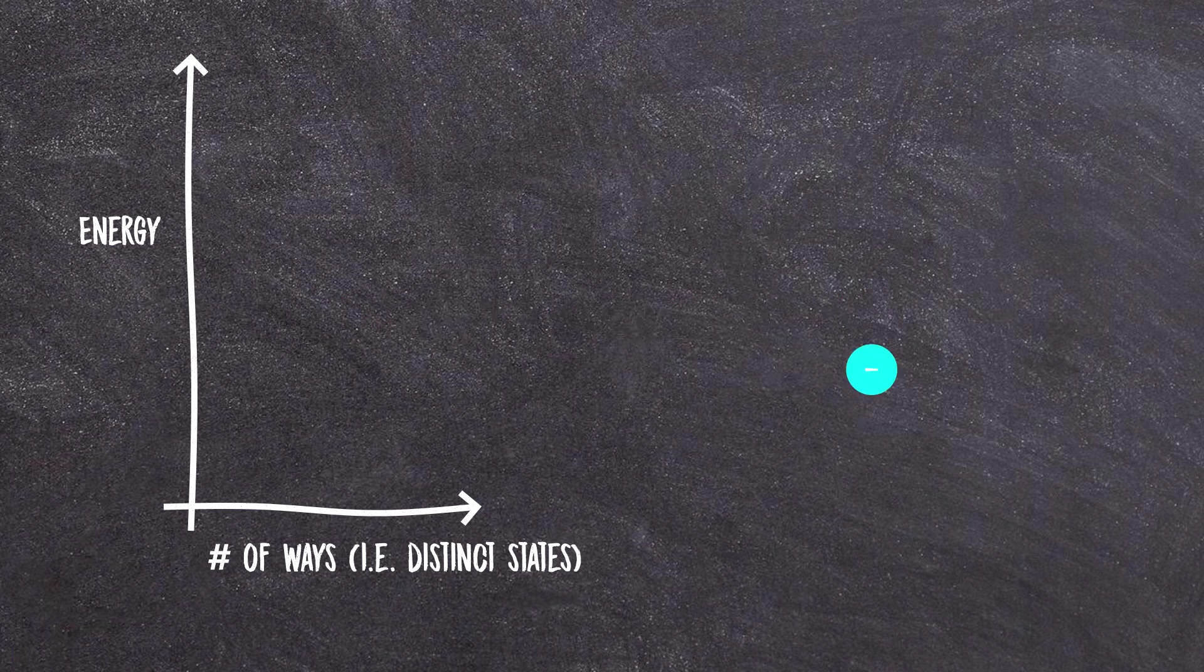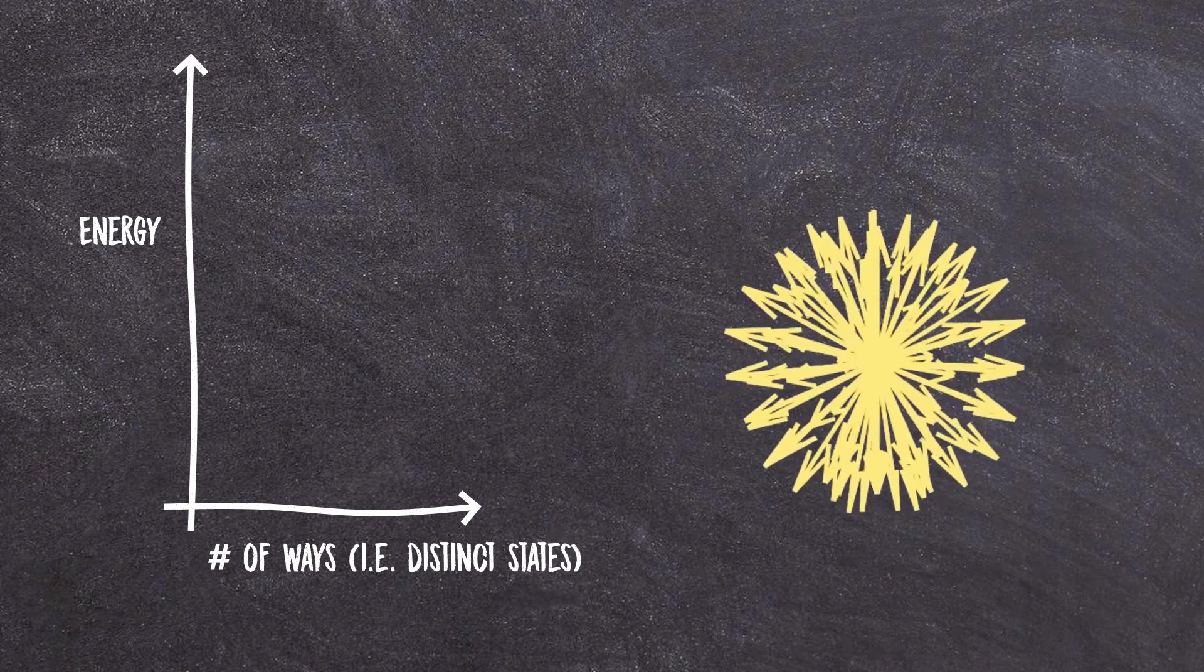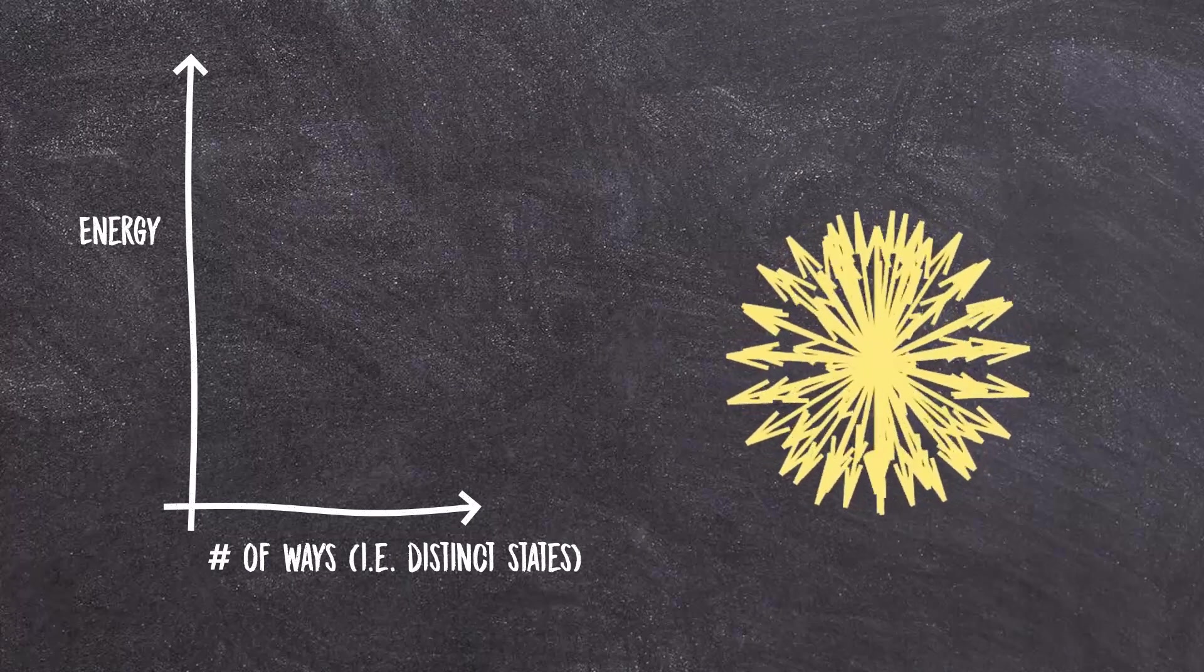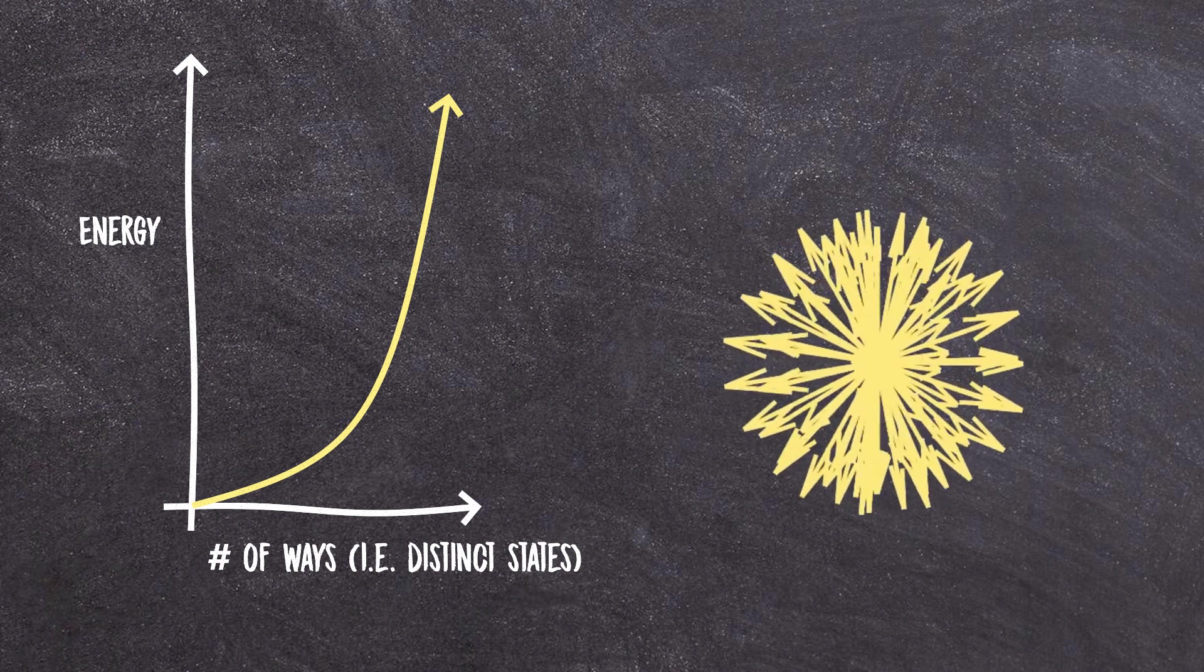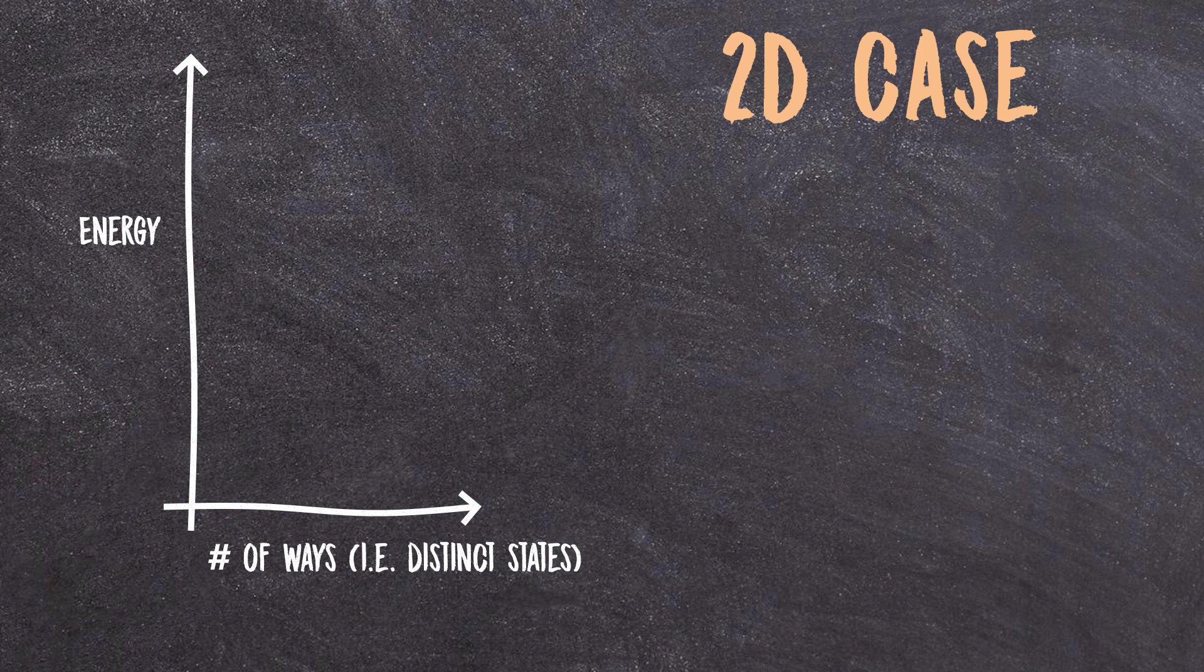In three dimensions, any electron with the same speed but pointing in any direction on a sphere will have the same energy. If you crank the calculus on this, you'll find that that gives you a density of states graph that looks like this. But what if we weren't in a three-dimensional universe? Say we were in a two-dimensional universe. How would this graph change?